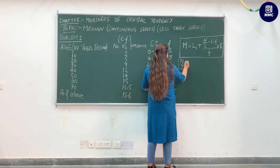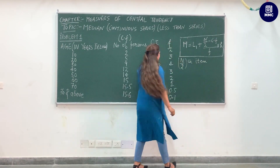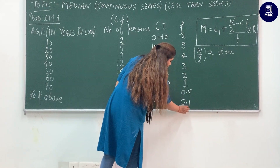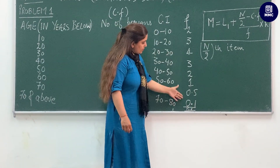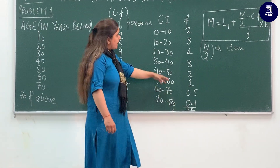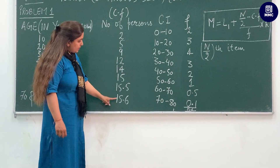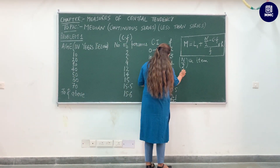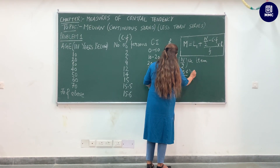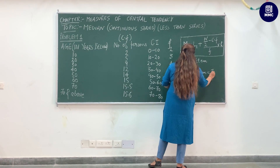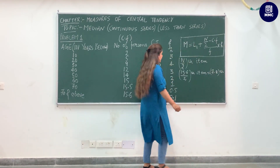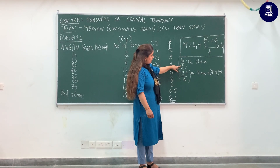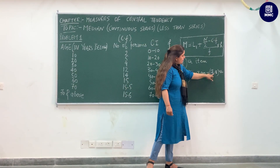First we find the n/2-th item. n is the sum of all frequencies, which equals 15.6 — you can verify this against the last CF value, they must always be equal. So n/2 equals 15.6 divided by 2, which gives 7.8. We calculate this to determine the lower class boundary to substitute into the formula.